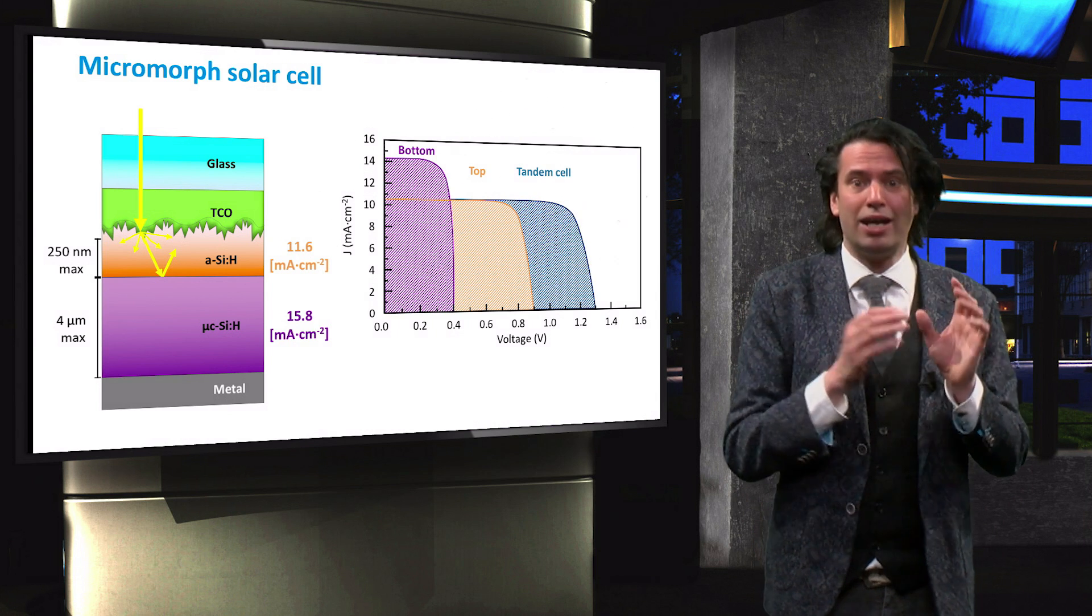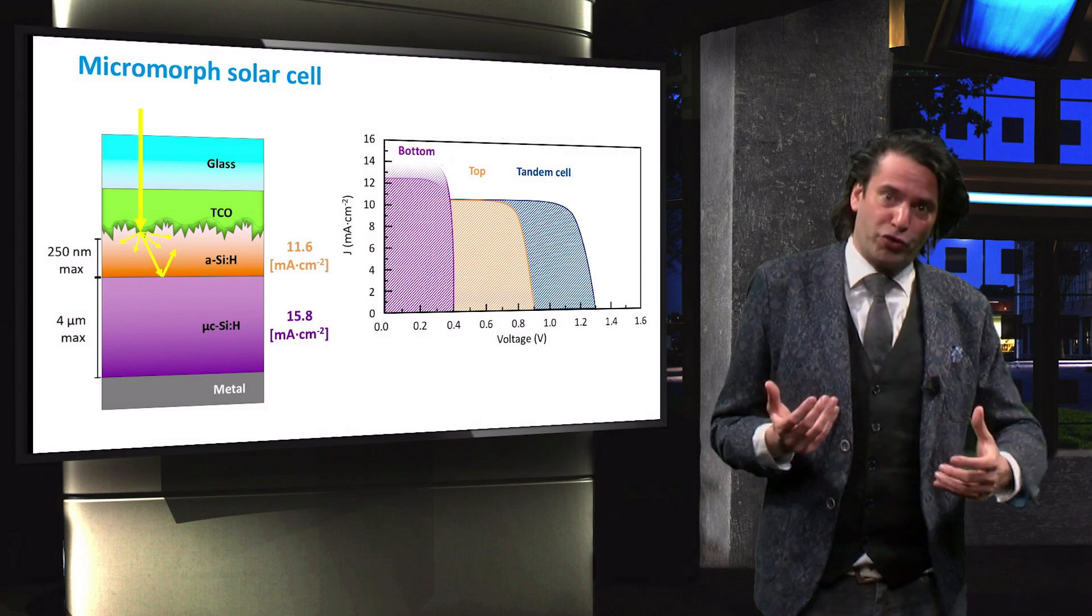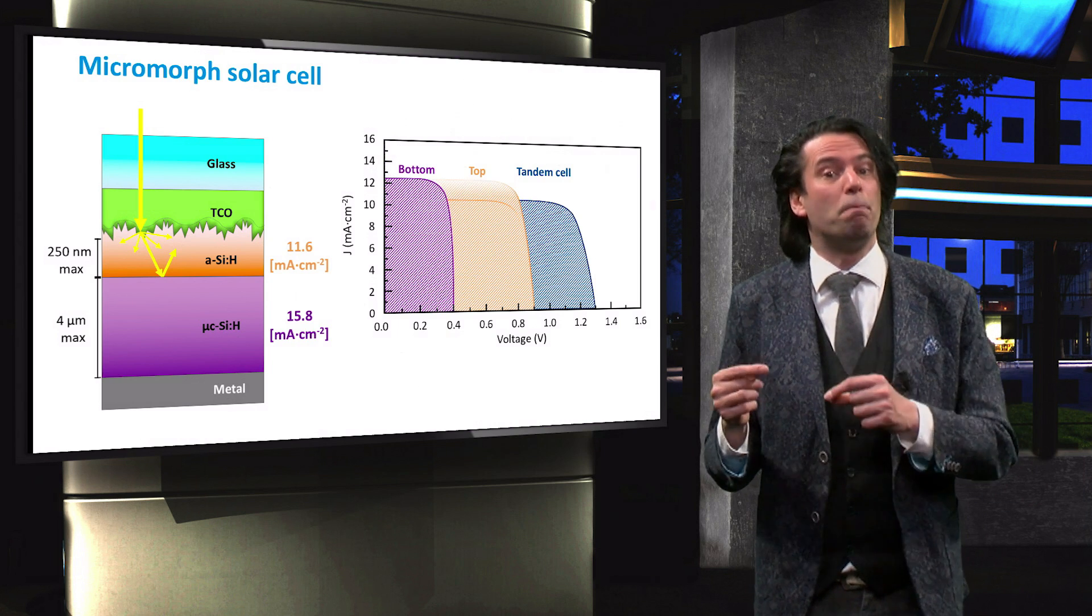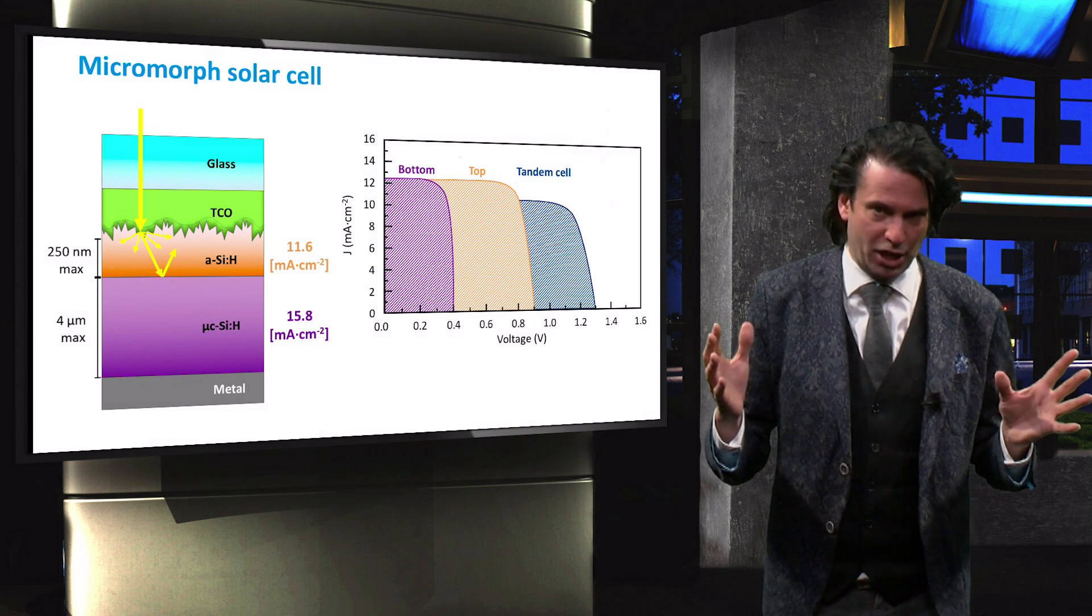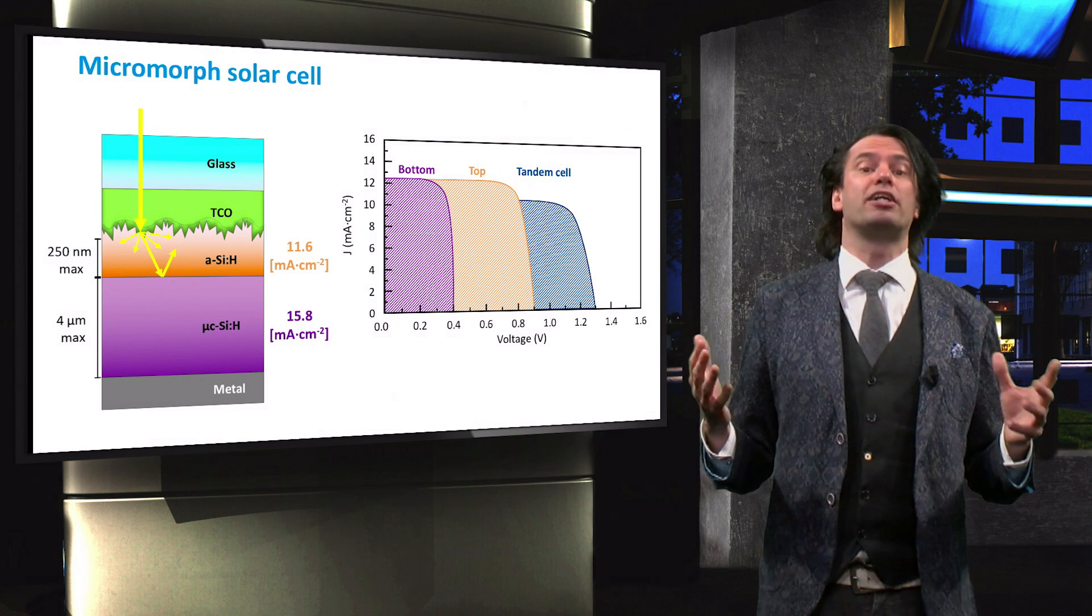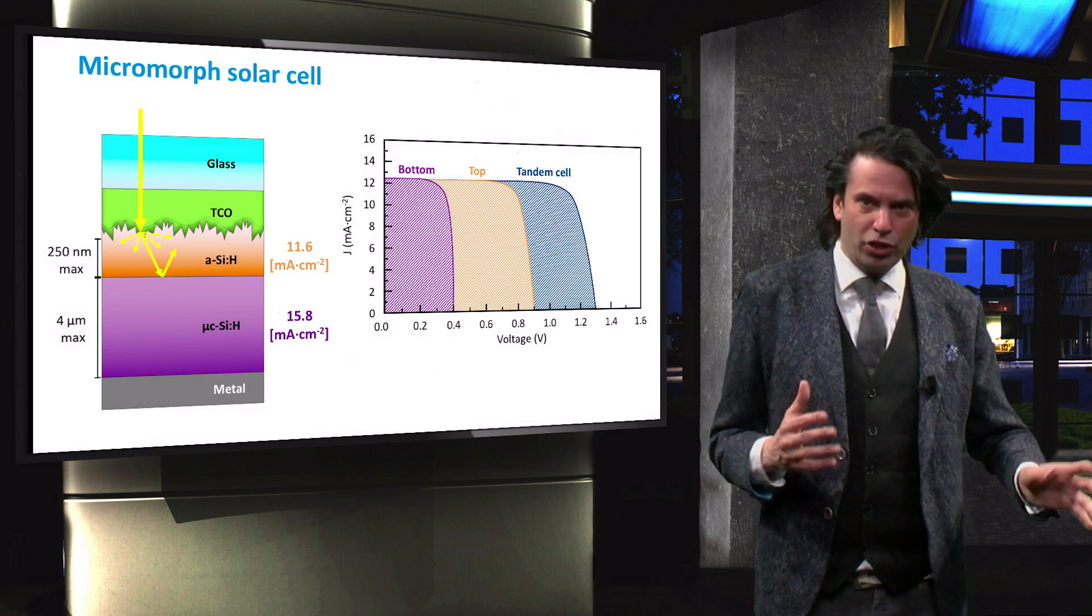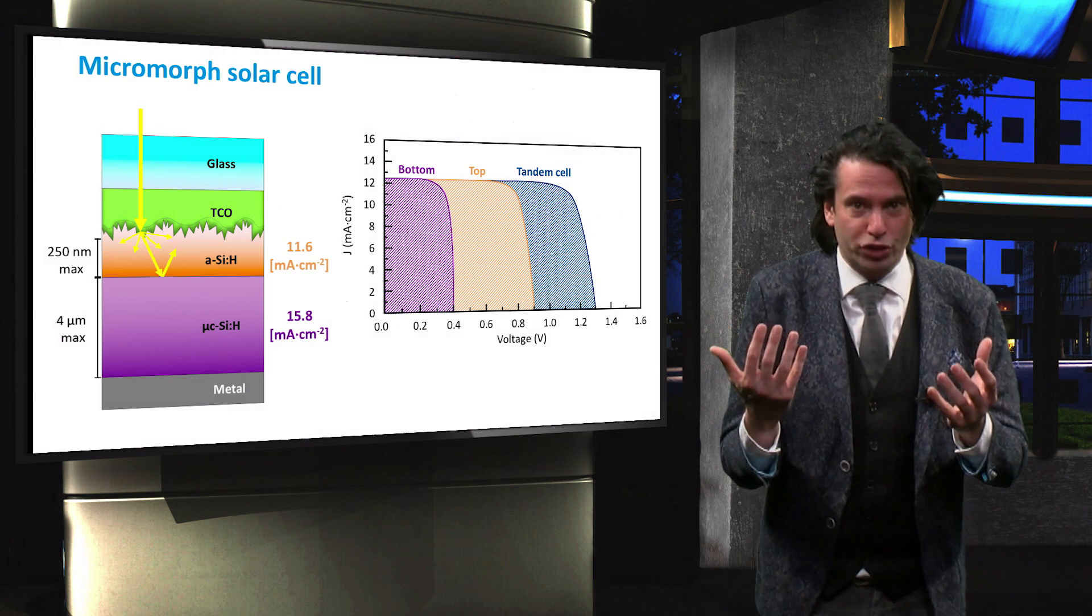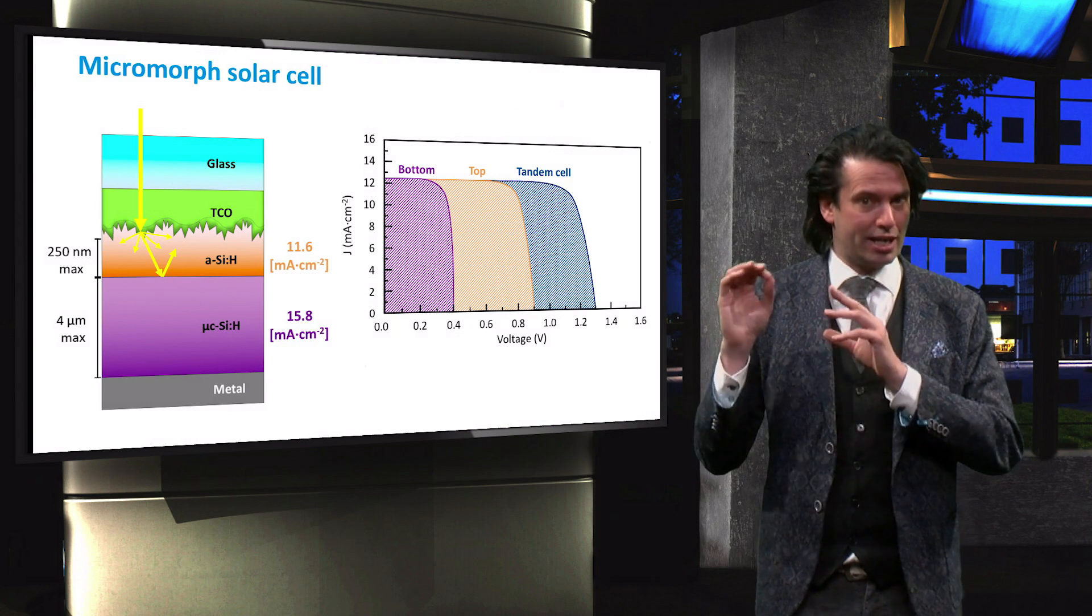However, the current of the amorphous absorber limits the output of the tandem cell. If we transfer some of the current from the bottom to the top cell, so that both cells have matching output currents, the current of the tandem device will increase. Consequently, the conversion efficiency of the overall multi-junction device will increase as well.